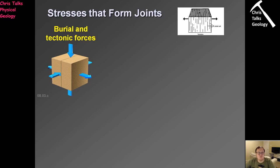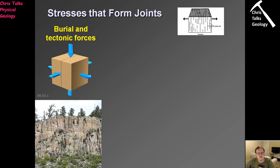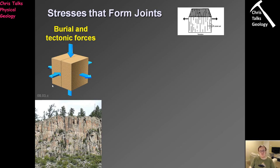How do we form joints? The first way is the most straightforward: burial and tectonic forces. In the case of burial, when a rock gets buried one or two kilometers down in the crust, the weight of the rock above it is sufficient to make the rock crack. In the case of tectonic forces, if you take a piece of rock without a crack and pull it until the two pieces snap, a fracture — our joint — forms. These are the two most common ways of forming joints.